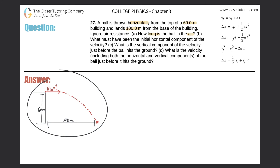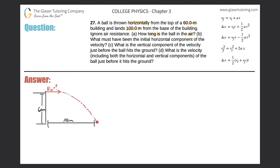We have a ball being thrown horizontally. It originates at a height of 60 meters above the ground and will travel horizontally 100 meters. The first part is to find the time, so let's list what we know in each direction. For the x-components, the only value we really know is the displacement, which equals 100 meters. I don't know the initial velocity in the x direction, and I also don't know the time.